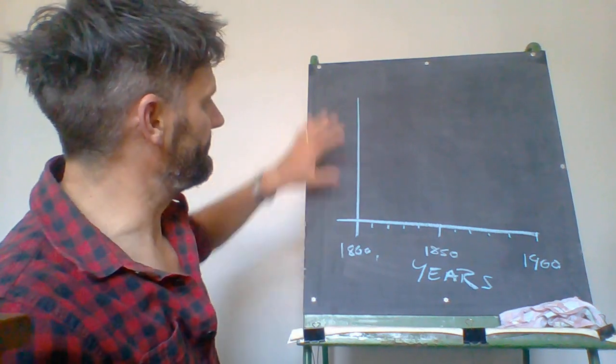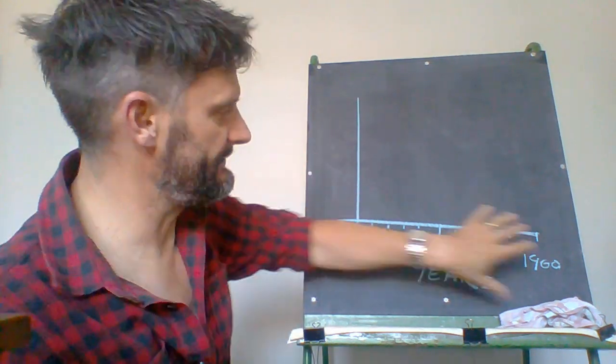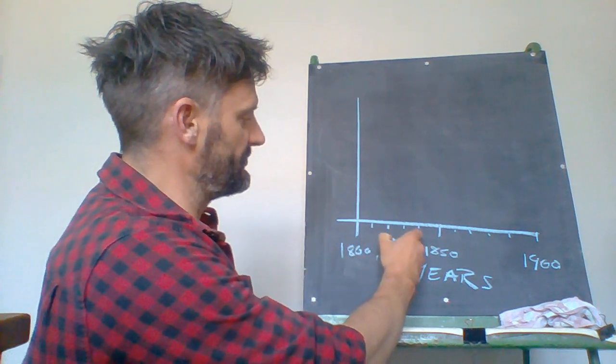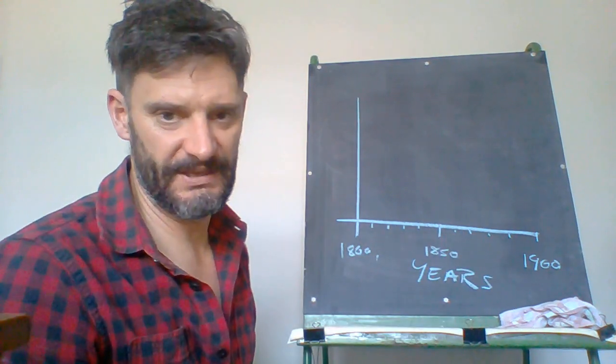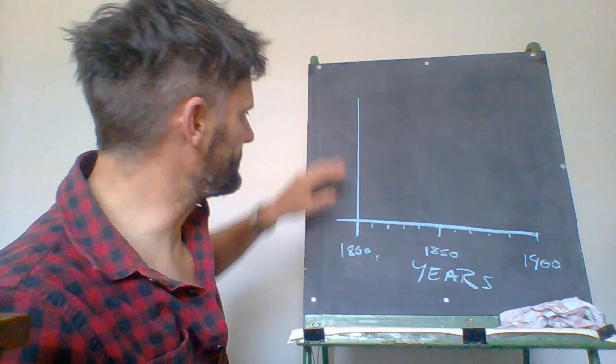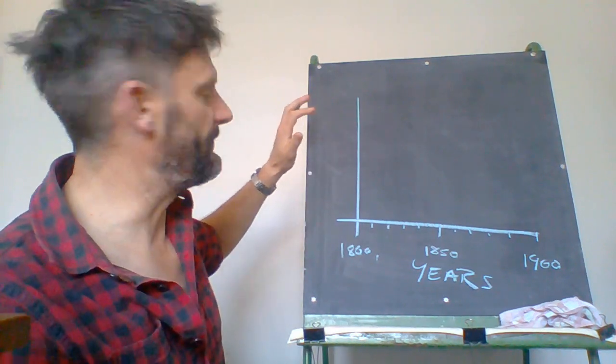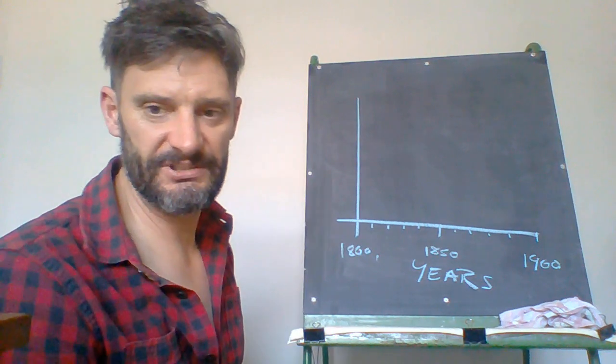The next thing I need to look at is what goes up the side. Now I've got my time down the bottom which is years as always. Up the side though I need to show what I actually want to graph and in this case it's the population or the European population in New Zealand.